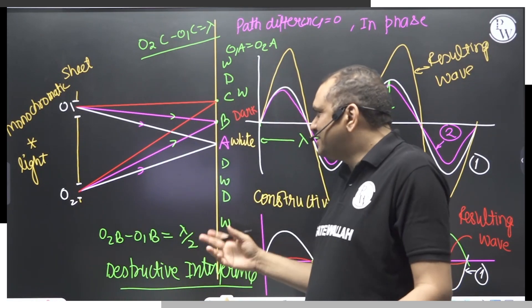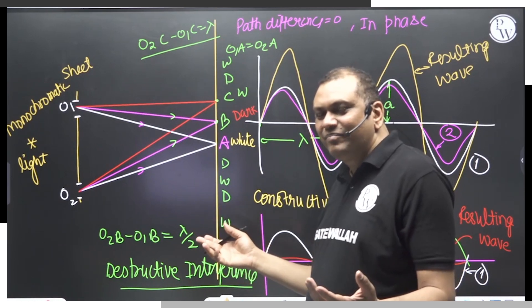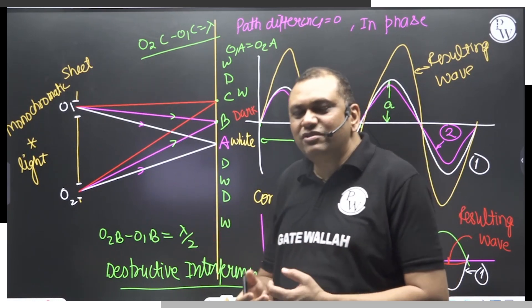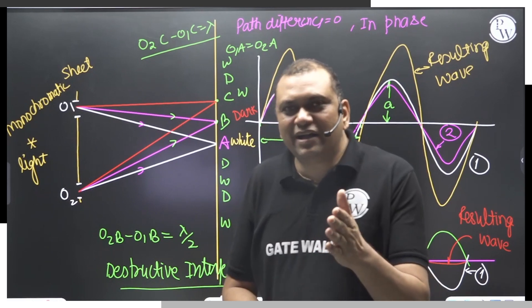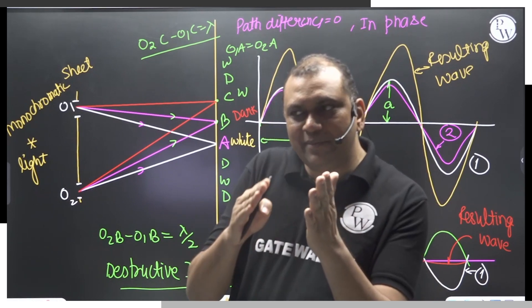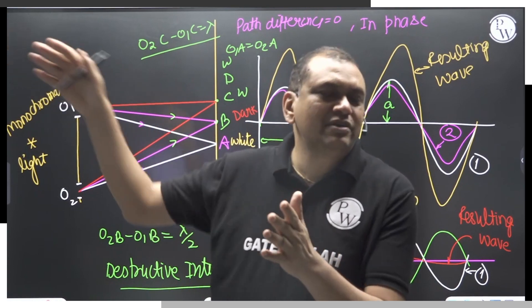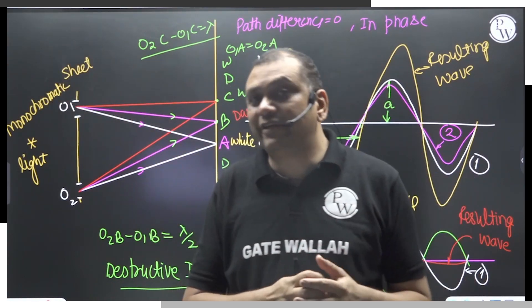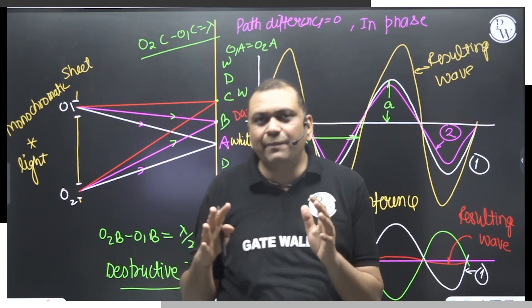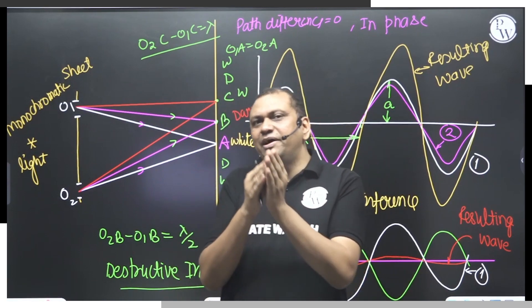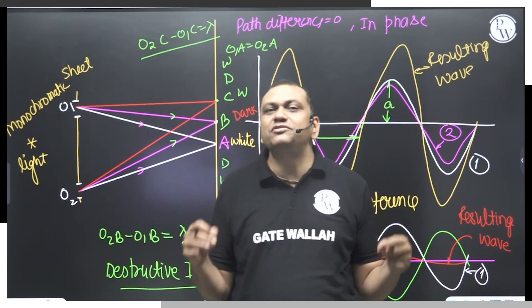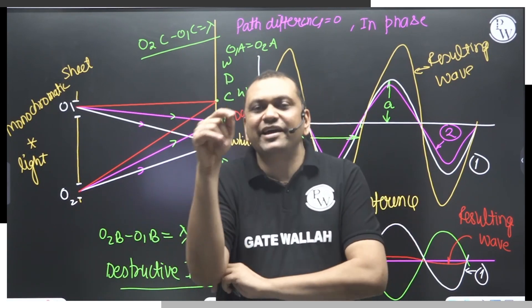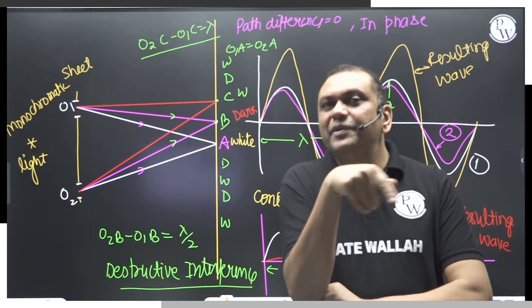In summary, from a source of monochromatic light, if the path differences are 0, lambda, 2 lambda, 3 lambda and so on, it leads to constructive interference and a bright band appears on the screen. If path differences are lambda by 2, 3 lambda by 2, and so on, it leads to destructive interference and a dark band appears on the screen.